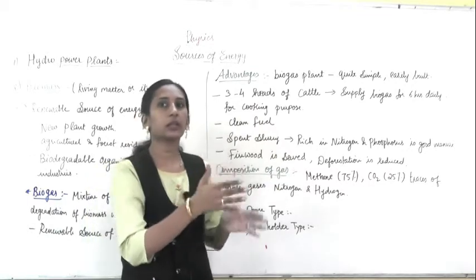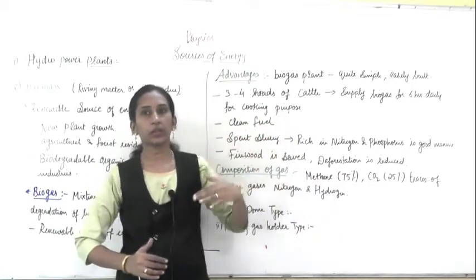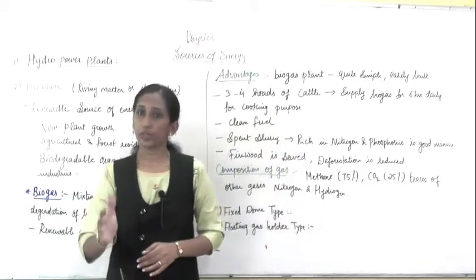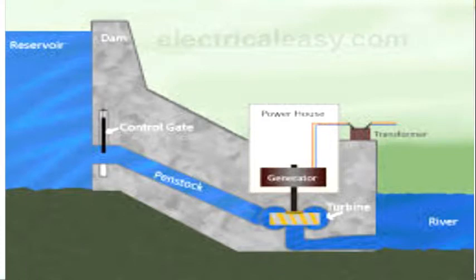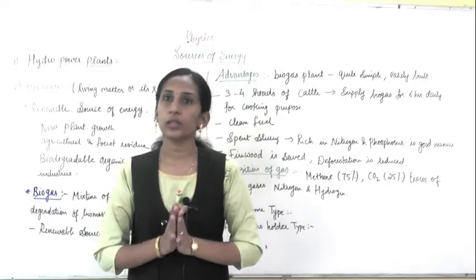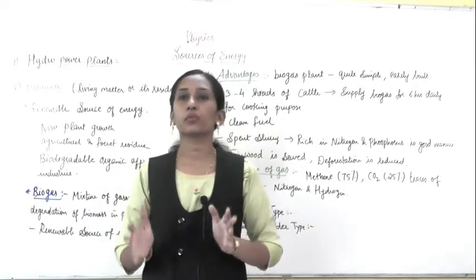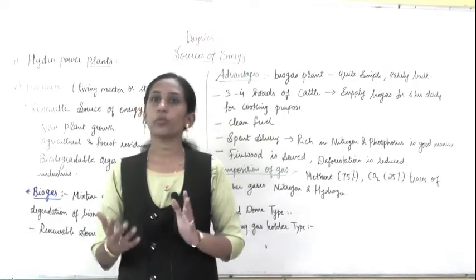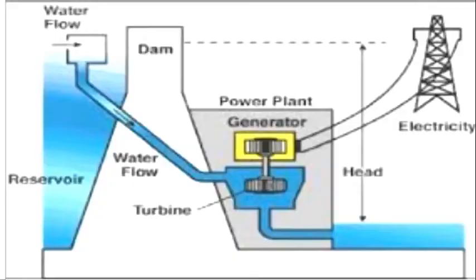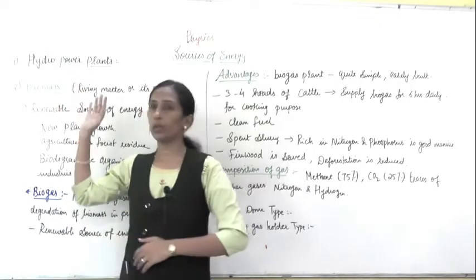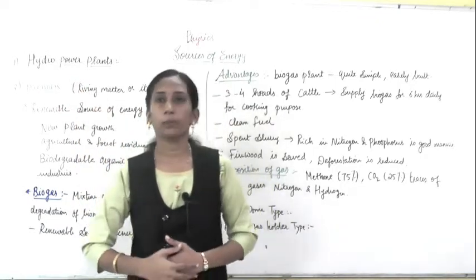When the dam is constructed, the level of water rises, and when the level of water rises, kinetic energy gets converted into potential energy because of the increasing height. This water is carried through pipelines at the bottom of the dam near the turbines. Because of this potential energy, the turbine rotates and electricity is generated.